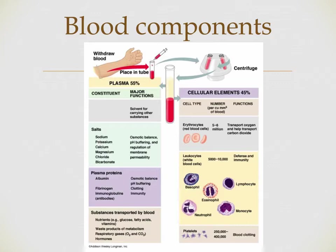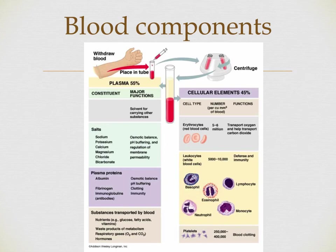Here's another diagram that breaks everything down into cellular elements — red blood cells, white blood cells, and platelets on one side — and plasma on the other. It shows the electrolytes or different salts being carried around: sodium, potassium, calcium, magnesium, chloride, bicarbonate, and plasma proteins like albumin, which you'll hear about a lot when looking at chemistry panels. Other nutrients in the blood include glucose, fatty acids, vitamins, waste products, liver enzymes, respiratory gases, and hormones.